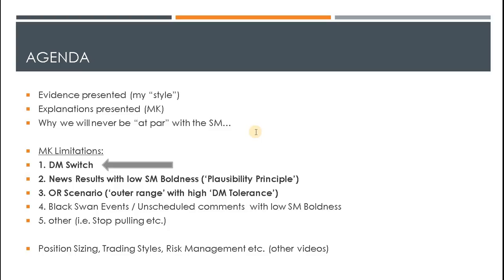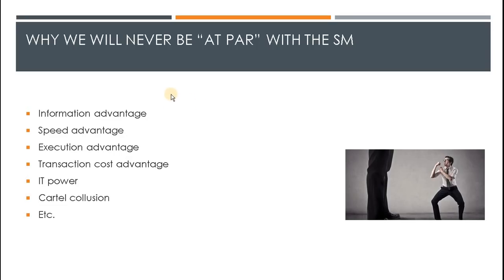Remember that the smart money has an execution advantage, a speed advantage, and a transaction cost advantage. We are on the buy side — whether you are a private trader, fund, family office, or whatever, you're a price taker. The smart money is on the other side; they are the price makers. They earn transaction costs for making a market. We on the buy side pay this transaction cost, and obviously we're not part of the smart money cartel or their dark pool which coordinates the algorithms.